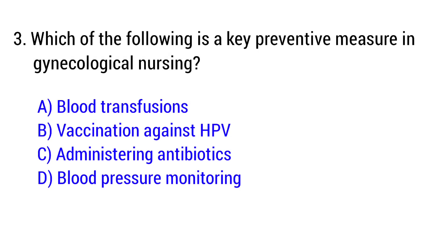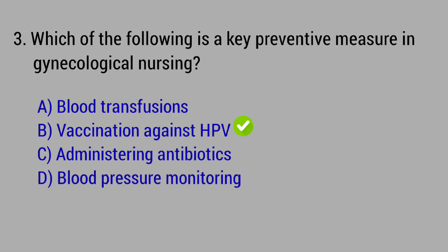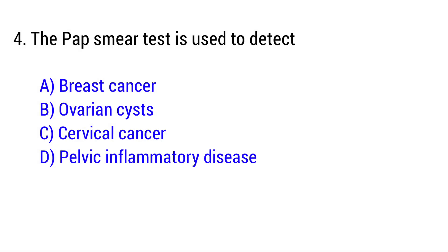Question number 3: Which of the following is a key preventive measure in gynecological nursing? The right answer is Option B: Vaccination against HPV. Question number 4: The Pap smear test is used to detect — the right answer is Option C: Cervical cancer.